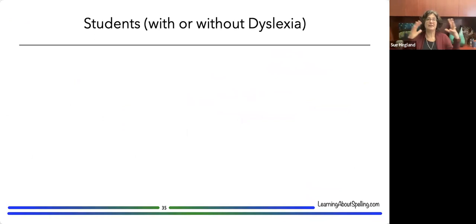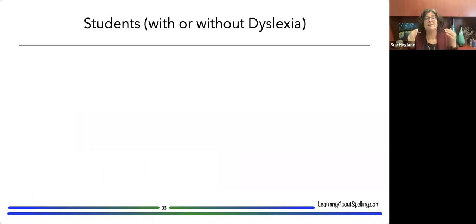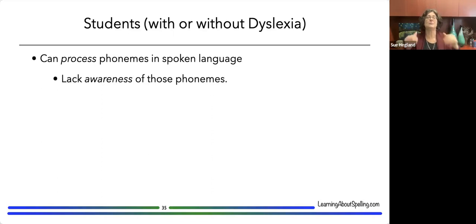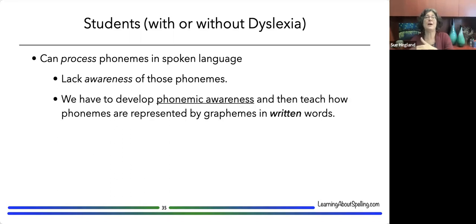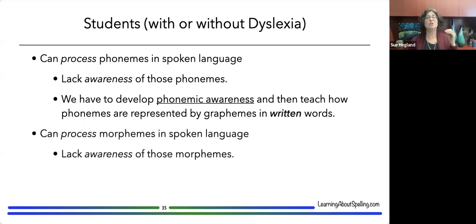I want to come back to why we're all here — to try to help students. Students with or without dyslexia don't need us to help them process phonemes in spoken language, unless they have a speech issue. They can speak and process phonemes naturally, but they don't have awareness of them as conceptual units. So we help them develop phonemic awareness and teach how phonemes are represented by graphemes in written words. Exactly the same is true of morphological awareness: students can process morphemes in spoken language, but developing explicit awareness of them — especially in writing — is what we teach.